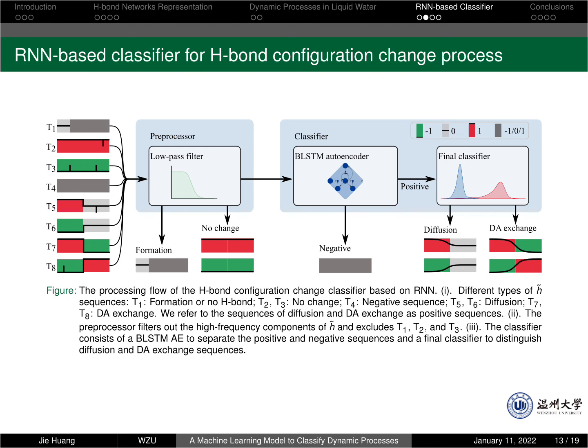As for the positive sequences, we use a final classifier to tell if it's diffusion sequences or DA-exchange sequences. The mechanism behind the final classifier is intuitive. The range of a sequence is defined as the maximum value minus the minimum value. Then we can see that the range of DA-exchange sequences is much larger than diffusion sequences.